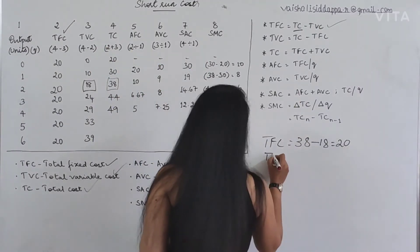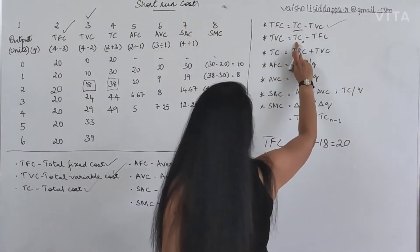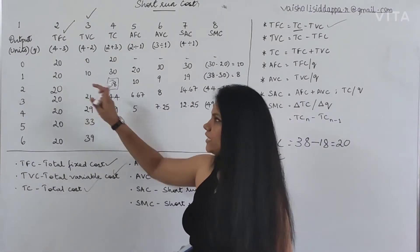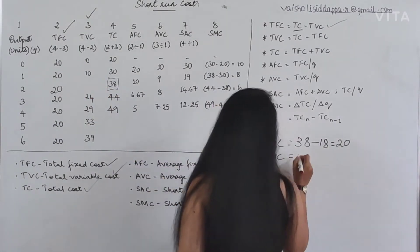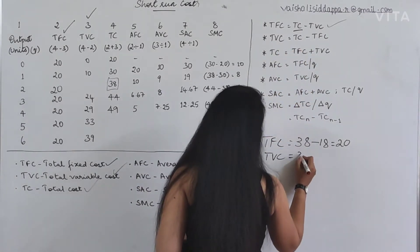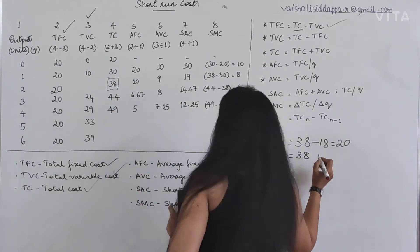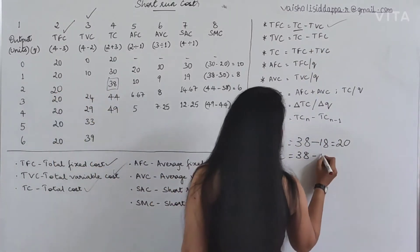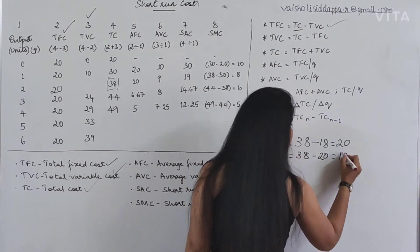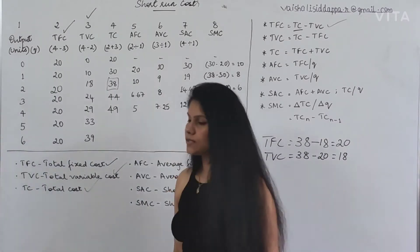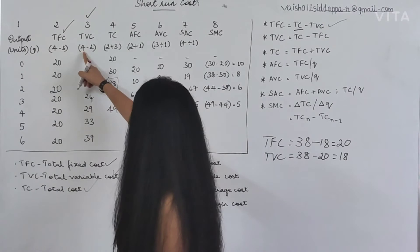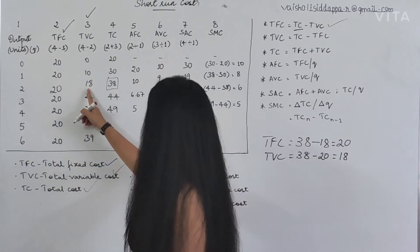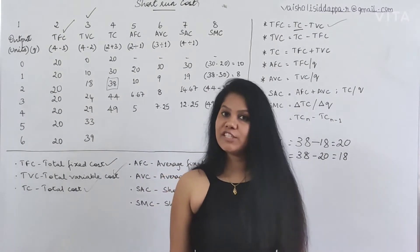Next, you have to find out TVC. The formula says TVC = TC minus TFC. Just imagine you are not aware of TVC. TVC equals TC which is 38, minus TFC which is 20. The answer is 18. That is how we calculate it - column 4 minus column 2. If you do it, you will get TVC.